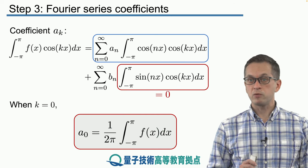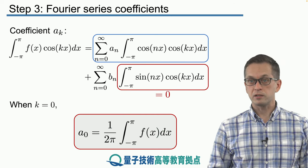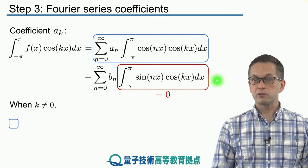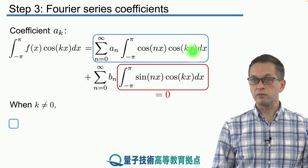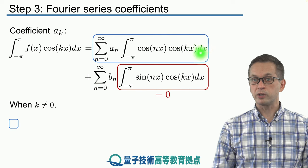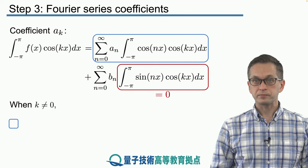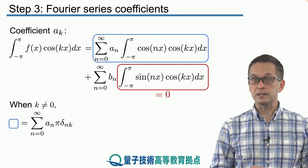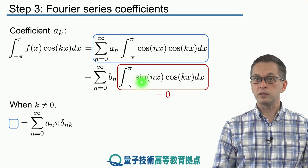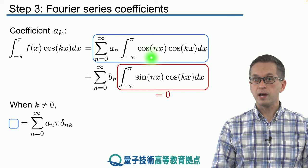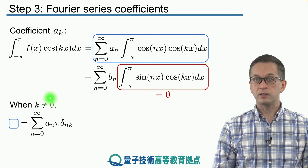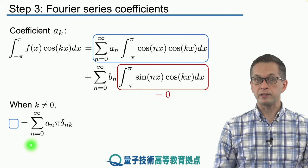So this was when k was equal to 0. How about other k's, non-zero k's? Well, again, the red integral still remains 0. That's regardless of what k value we are considering. And we have to look at only this blue integral up there. And in this case, we can use our previous result derived in step two about the orthogonality of cos(nx) times cos(kx). And we have the following simplifying expression.